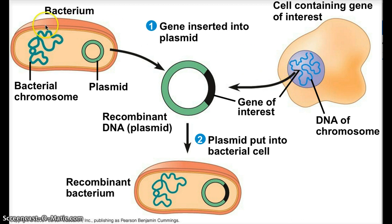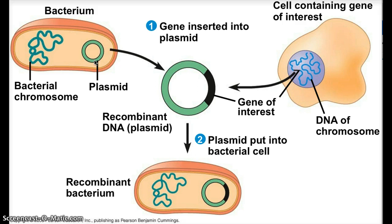Over here, we have our bacteria. Bacteria have one big chromosome, and then some bacteria have a little circular piece of DNA called a plasmid. In this picture, they're continuing to use the word plasmid. I had said you could kind of use them interchangeably — plasmid or vector.